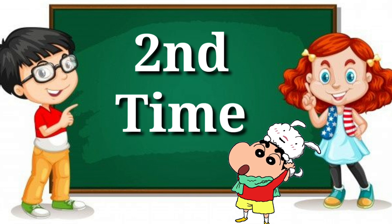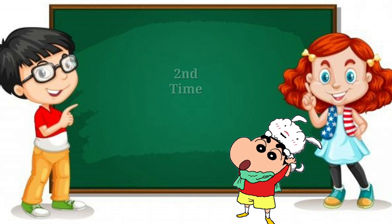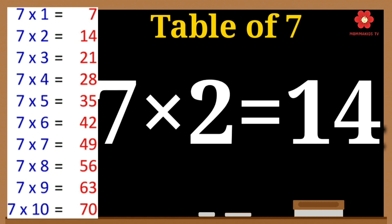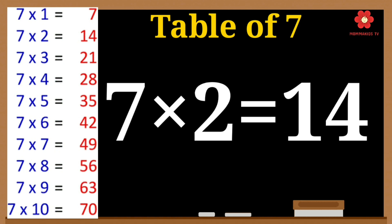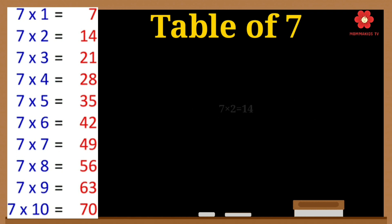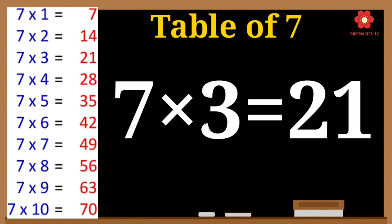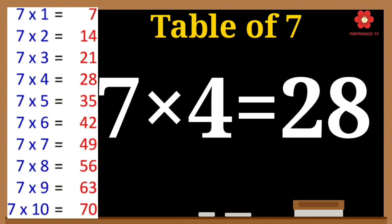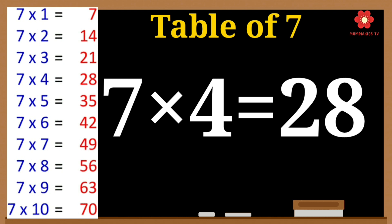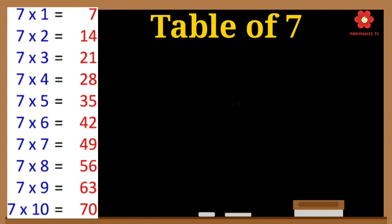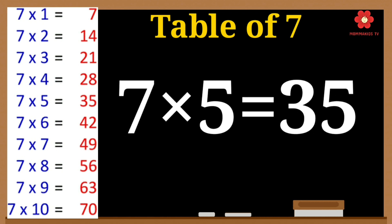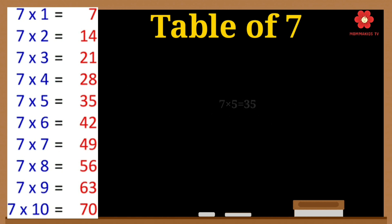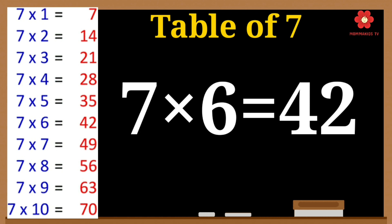7 1's are 7. 7 2's are 14. 7 2's are 14. 7 3's are 21. 7 3's are 21. 7 4's are 28. 7 4's are 28. 7 5's are 35. 7 6's are 42.